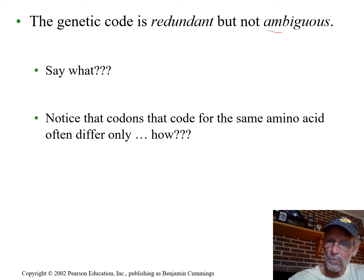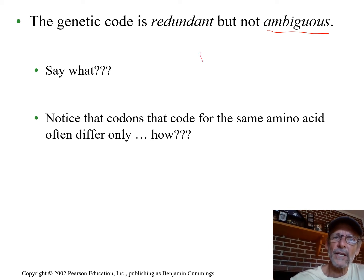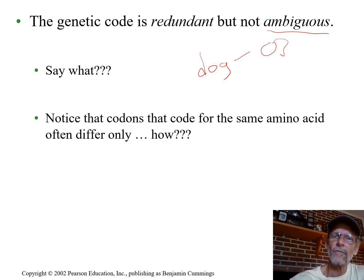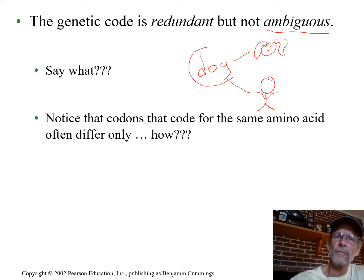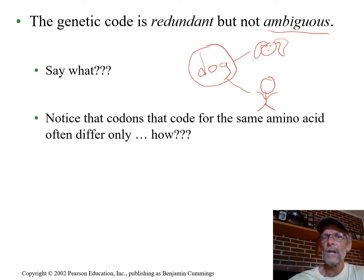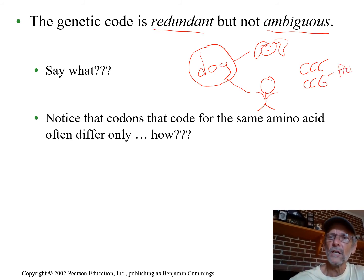That's the word 'ambiguous.' If I say 'look at my dog' and I'm talking about a floppy-eared puppy, you understand what I mean. But if I say 'look at this dog' and I'm talking about Johnny, that's very confusing — you've used the word ambiguously, to mean two different things. The genetic code is not ambiguous. CCC and CCG both mean proline — that's redundant — but they only mean proline. They don't mean this or that.